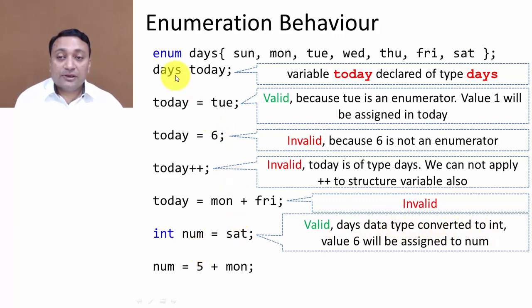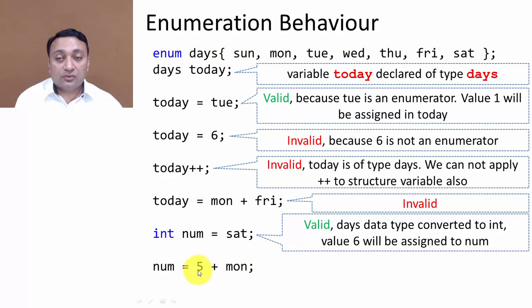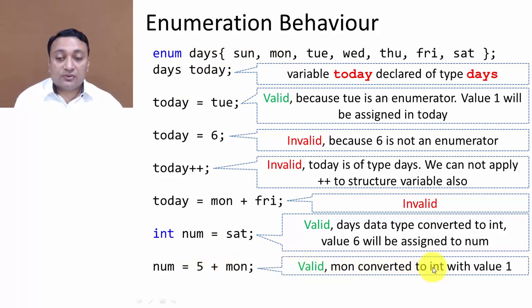However, if you declare a variable of type integer and assign an enumeration constant to it, that is valid — the 'days' data type is automatically converted to integer. For example, 'saturday' is of type 'days' and is automatically converted to the integer value 6. Similarly, '5 + monday' converts monday to integer 1, giving 6, which is stored in an integer variable.